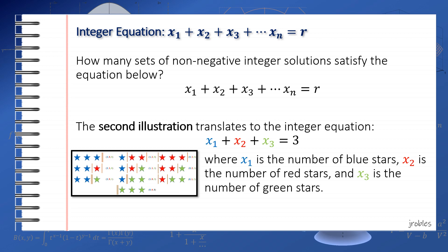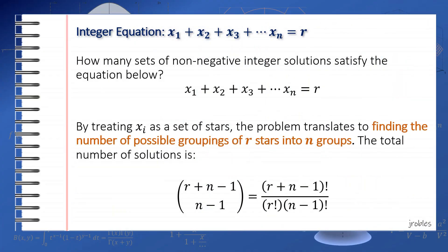By treating the x_i in the integer equation as a set of stars, the objective essentially translates to finding the number of possible groupings of r stars into n groups. Now by the stars and bars technique, the total number of solutions is therefore equal to C(r+n-1, n-1).